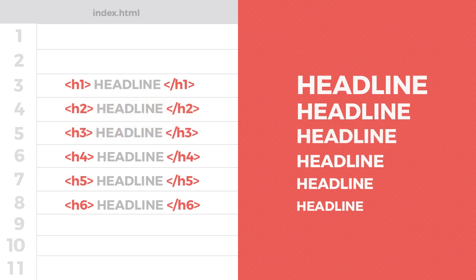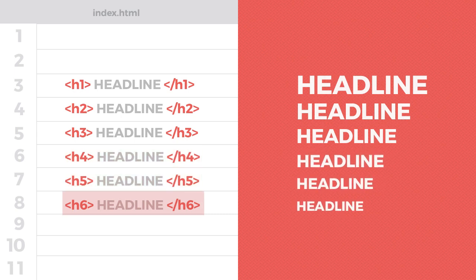If you want a headline that's less important than H1, H2, or H3, you could use H4, H5, or H6. H6 is as unimportant as headline tags go. If you have some text and it's less important than H6, then it's probably not a header and you should probably give it a different type of HTML tag.